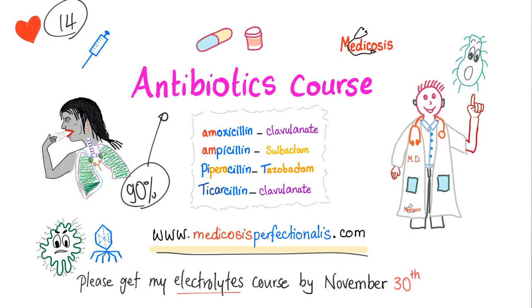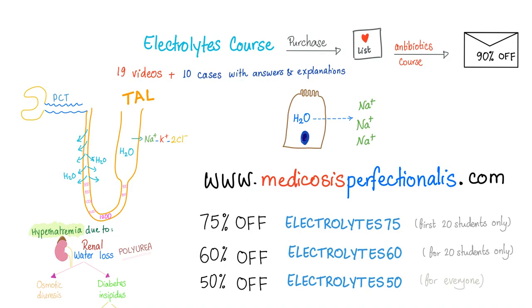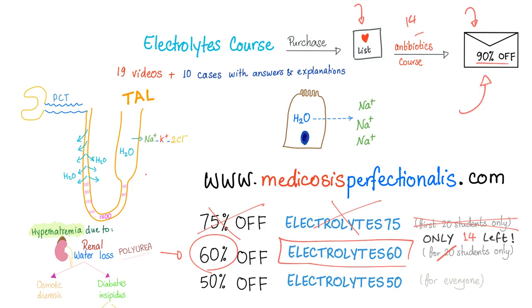There are many students that have got my electrolytes course. All of them will get the 90% discount. Here is a discount to get my electrolytes course. You can use the ELECTROLYTES60 promo code to get 60% off your electrolytes course. Then you will be on my list. When I release my antibiotics course in about 14 days, you will receive an email from me containing your promo code of the 90% discount.